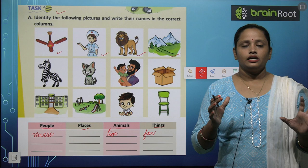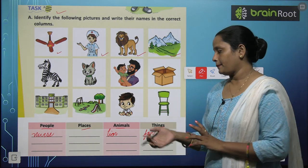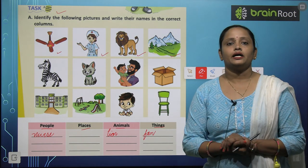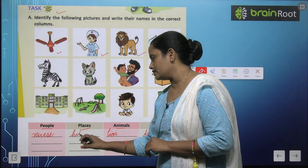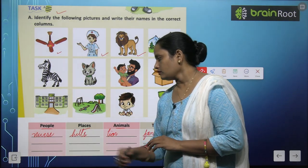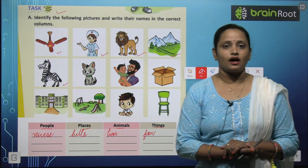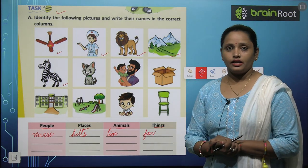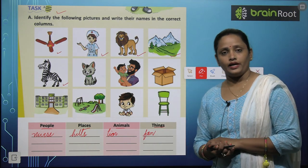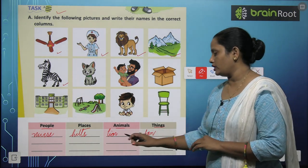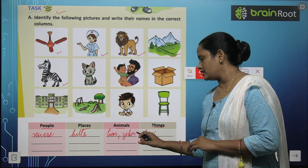Next comes hills or mountains. Toh yeh kya hai? This is a place. So let's write here — hills. Next picture is of zebra. Zebra kya hai? Kya yeh koi person hai? Animal hai? Place hai? Ya thing hai? Yeh ek animal hai. So let's write zebra.